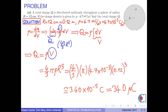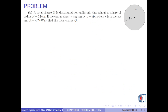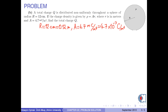Let's solve part B. A total charge Q is distributed non-uniformly throughout a sphere of radius r equal to 12 cm. If the charge density is given by rho equals a times r, where r is in meters and a is 4.7 mC per meter to the fourth, find the total charge Q.